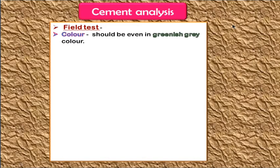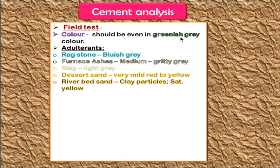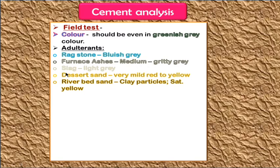Moving to cement analysis — first, the field test. The color of cement is normally greenish gray, due to the presence of iron oxide. If there are adulterants, the color changes: ragstone added gives a bluish gray color; furnace ashes added give a medium to gritty gray; slag gives a light gray color.